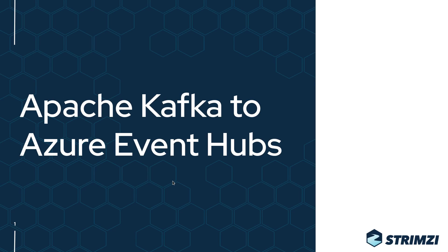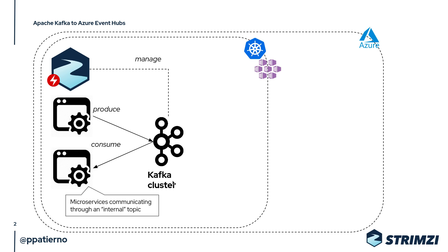Hi. In this video I'm going to show how it's really simple to deploy an Apache Kafka cluster on Kubernetes using the Strimzi operator and how it's possible to integrate this Kafka cluster with Azure Event Hubs. I'm going to use AKS, the Azure Kubernetes Service, for deploying the Kubernetes cluster and then the Strimzi operator for deploying the Kafka cluster running on Kubernetes.